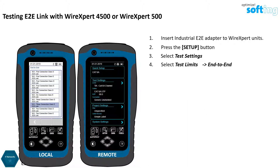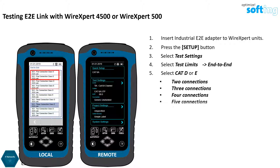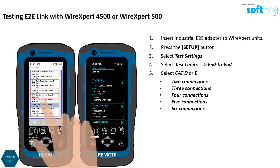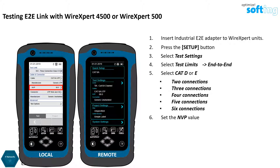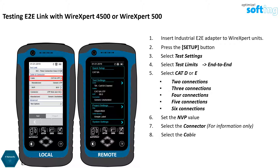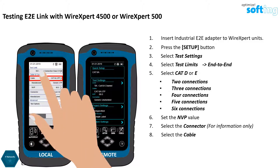Depending on the measurement category — Class D or Class E — select 2, 3, 4, 5, or 6 connections. The correct nominal velocity propagation, or NVP, needs to be indicated to obtain accurate length measurements. Selecting the type of connector is only for informational purposes and will not influence the measurement accuracy.